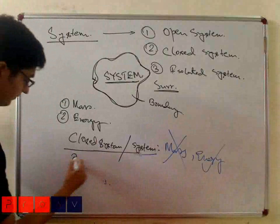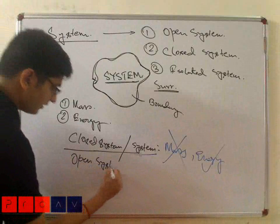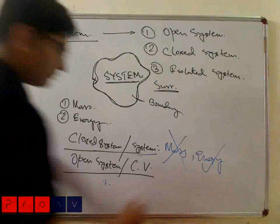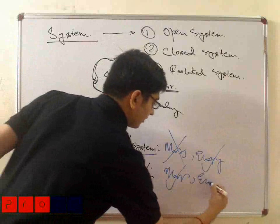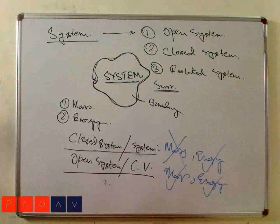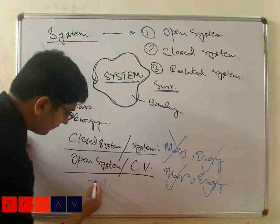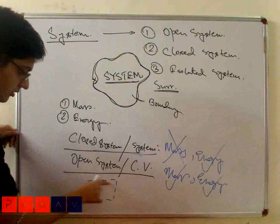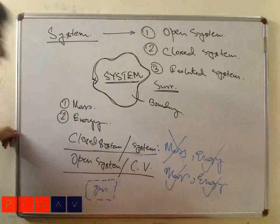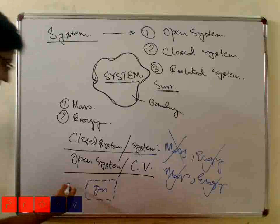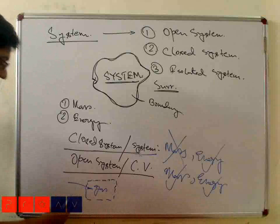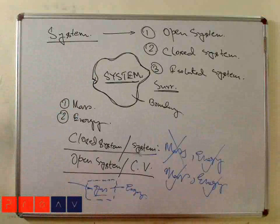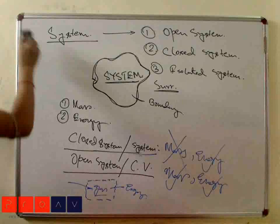The second is open system, also called control volume (CV). In control volume, both mass and energy can transfer. For example, consider a porous valve with some gas inside. Due to the porosity of the valve, outer air from the surroundings can come into the system, and energy can also pass across the boundary. So this is known as open system.